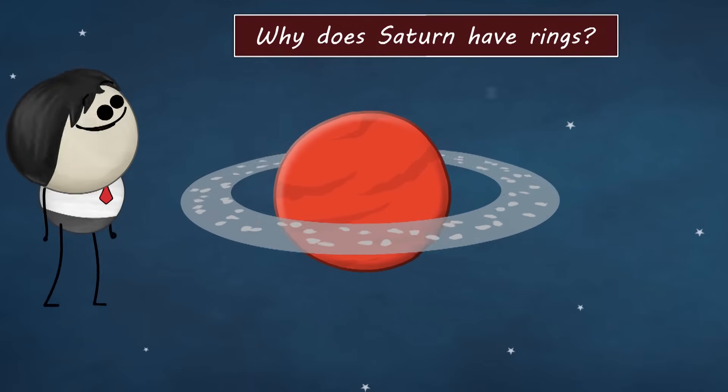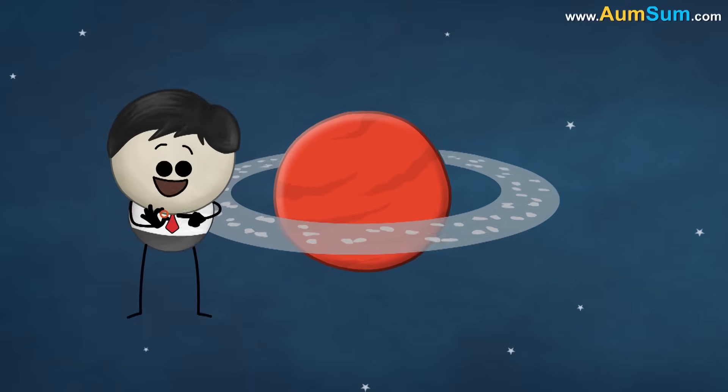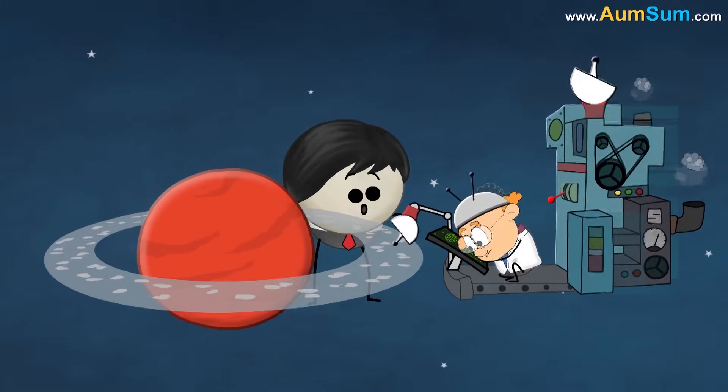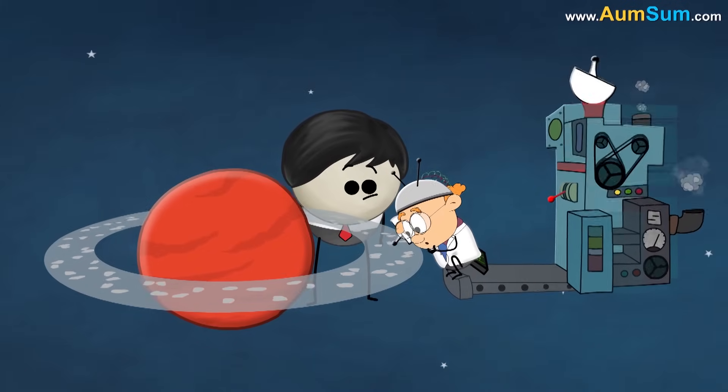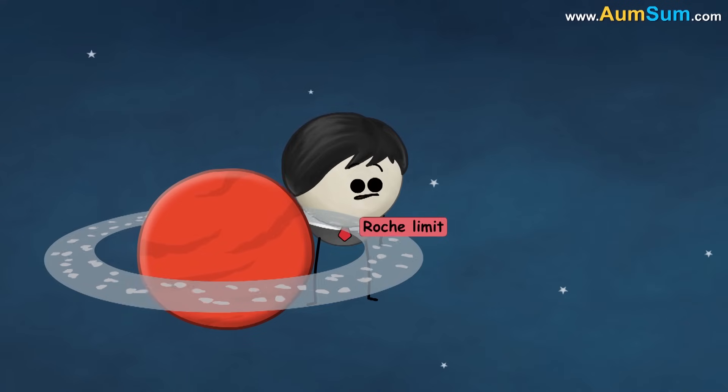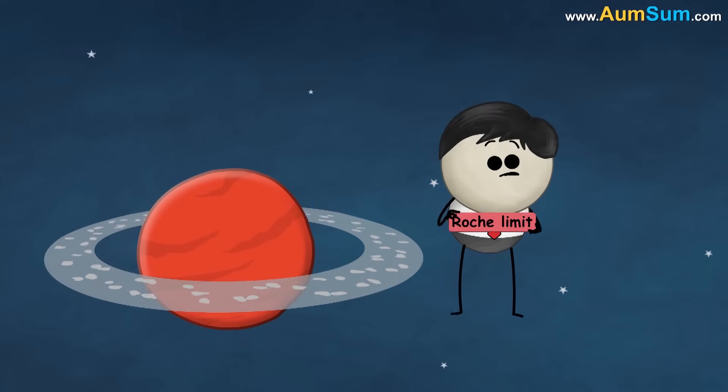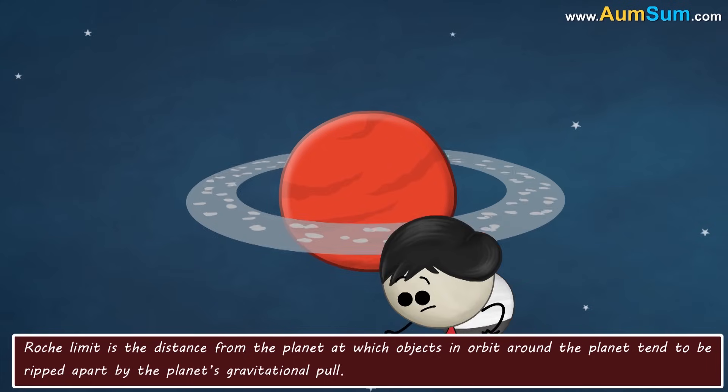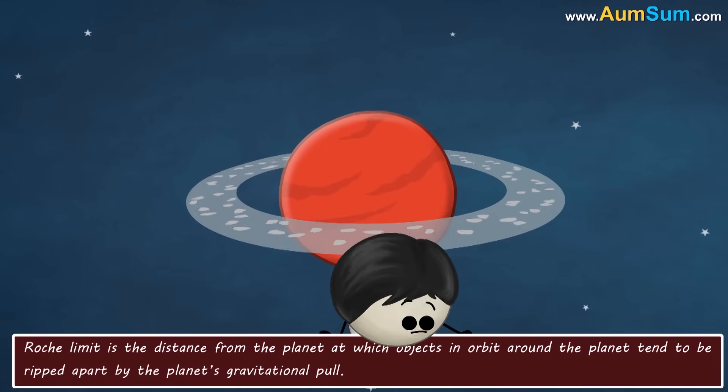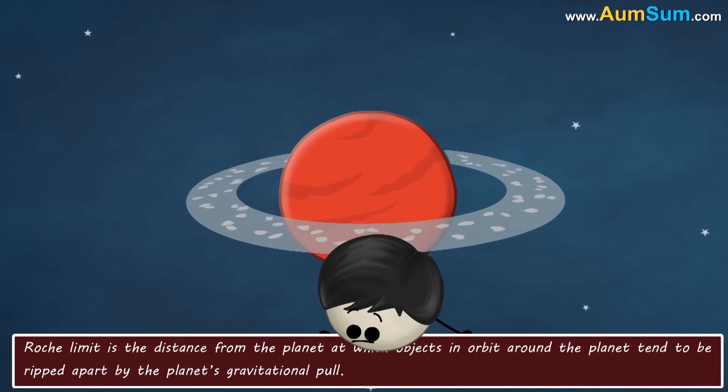Why does Saturn have rings? Because it has got engaged. No. Scientists don't exactly know why Saturn has rings. But they think that it is related to Roche limit. What is Roche limit? Roche limit is the distance from the planet at which objects in orbit around the planet tend to be ripped apart by the planet's gravitational pull.